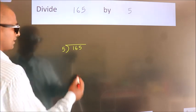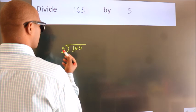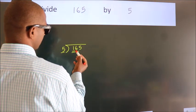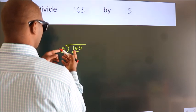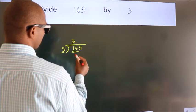Next, here we have 1, here 5. 1 is smaller than 5, so we should take 2 numbers: 16. A number close to 16 in the 5 table is 5 threes, 15.